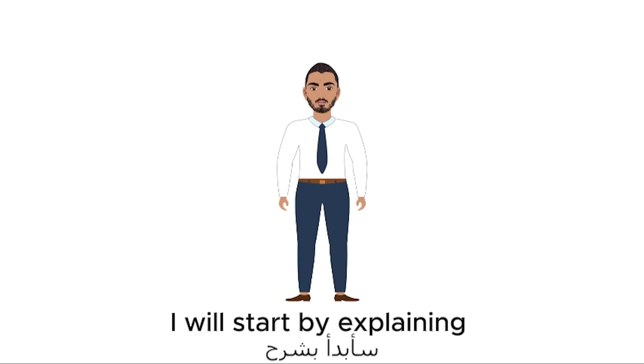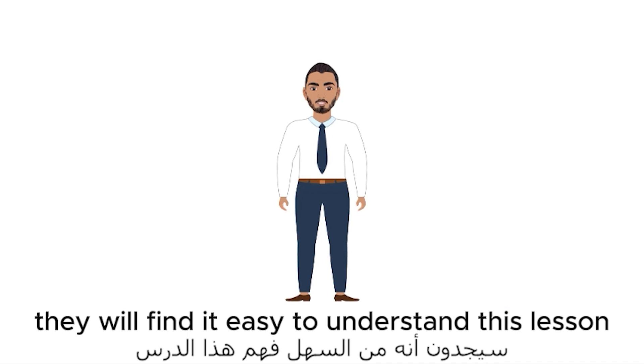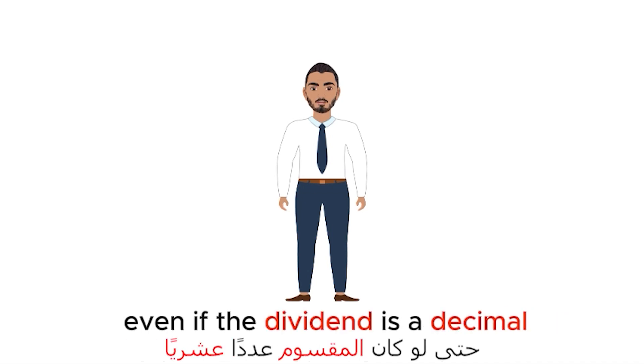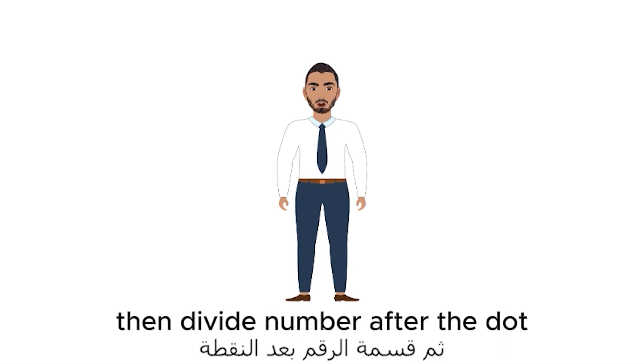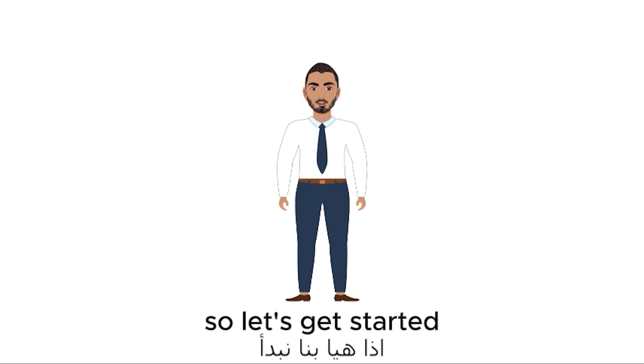In this video we are going to explain division of decimal number by a natural number. I will start by explaining the lesson quickly to save time. For students who followed lesson divisors of natural numbers, they will find it easy to understand this lesson because it is based on division. Even if the dividend is a decimal, we divide the number before the dot, put a dot, then divide the number after the dot. Let's explain this well and take an example, so let's get started.